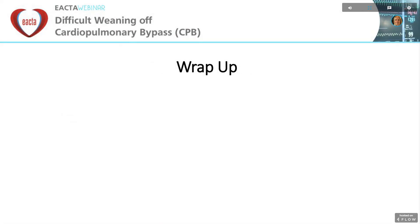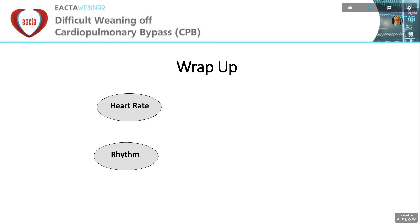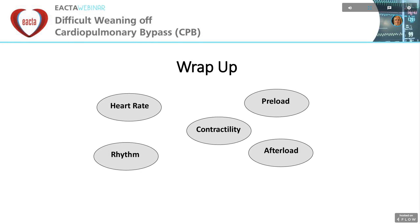We've heard five excellent talks about difficult weaning. How can we best summarize such a complex topic? I think one can summarize the physiology and pathophysiology of difficult weaning with five cardiac-specific variables which all need to be optimized: heart rate, rhythm, preload, afterload, and contractility. If any of these variables is suboptimal or fails, we will need to treat and optimize.